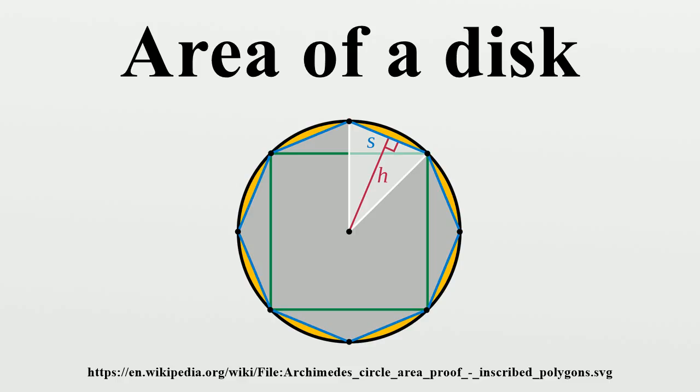As the number of sides increases, the length of the parallelogram base approaches half the circle circumference, and its height approaches the circle radius. In the limit, the parallelogram becomes a rectangle with width pi R and height R.